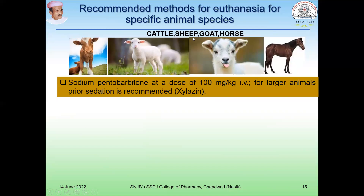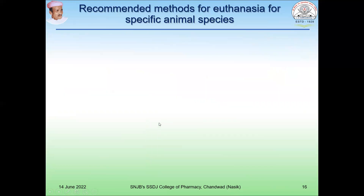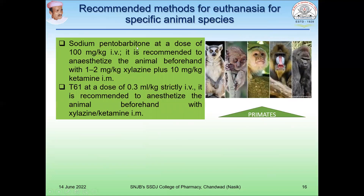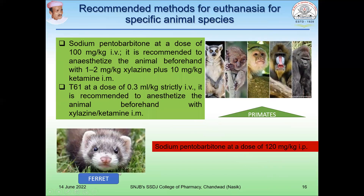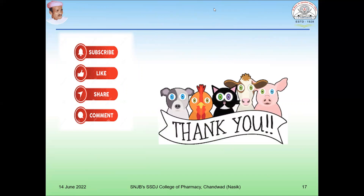For cattle, sheep, goat, and horse — sodium pentobarbital at a dose of 100 mg for larger animals. For dog — sodium pentobarbital and T61 are recommended. For primates such as monkeys — sodium pentobarbital at 100 mg/kg IV, and T61 compounds can also be given. For ferret — sodium pentobarbital at 120 mg/kg IP. For more detail, refer to the Vogel Drug Discovery reference book, which covers all these topics in detail.